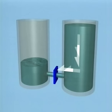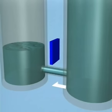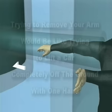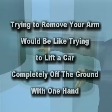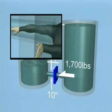The force depends on the difference in the depths of the water and the diameter of the pipe. If the difference between the depth of water is 50 feet and the diameter of the pipe is 10 inches, the force of water exerted on the valve is nearly 1,700 pounds. If the valve was suddenly opened and your arm was near it, it would be sucked into the hole instantly. Trying to remove your arm would be like trying to lift a car completely off the ground with one hand. You could only remove your arm if the pressures between the two bodies became nearly equalized, but your body makes a perfect seal, stopping equalization.